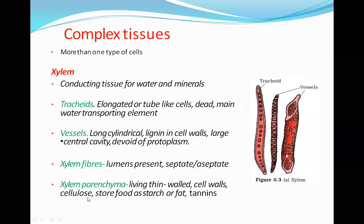Xylem parenchyma cells are living and thin-walled, with cell walls made of cellulose. The main function of xylem parenchyma is to store food as starch, fat, or tannins. So the four components of xylem are tracheids, vessels, xylem fibers, and xylem parenchyma. The main function of xylem is to conduct water and minerals — transporting them from one place to another throughout the plant body.